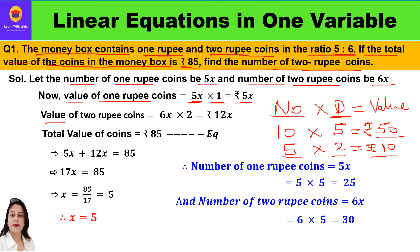The value of 2 rupee coins is 6x (number) multiplied by the denomination 2, so 6x into 2 equals 12x rupees. The value of 1 rupee coins is 5x rupees and the value of 2 rupee coins is 12x rupees. Since the total value of coins in the money box is 85 rupees, this helps us form the equation.